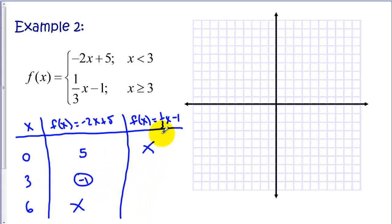Now let's fill our table for our second function. When I put 3 in, I've got 3 times 1/3 is 1. 1 minus 1, I've got 0. And if I put 6 in, 1/3 times 6 is 2. Minus 1 is positive 1.